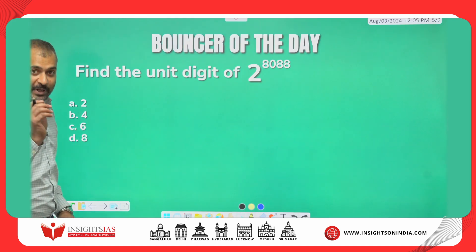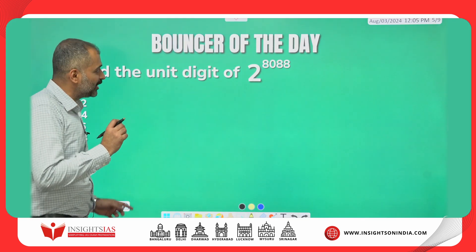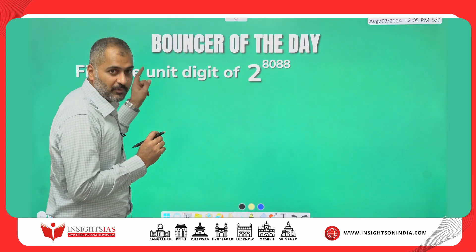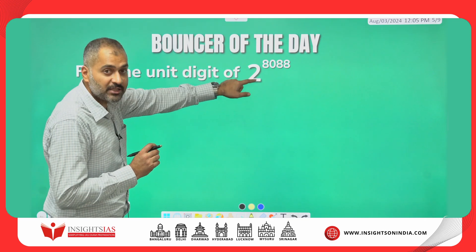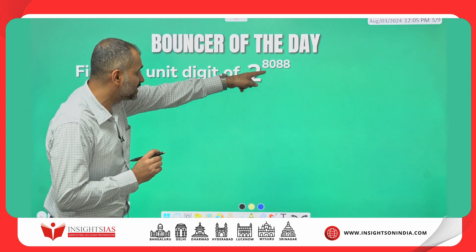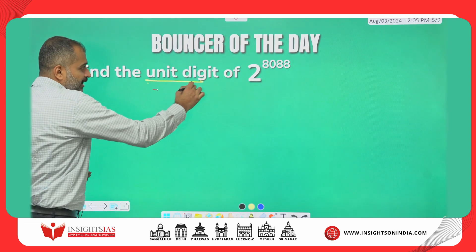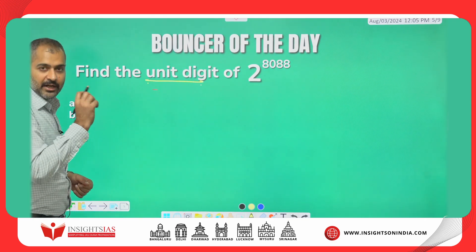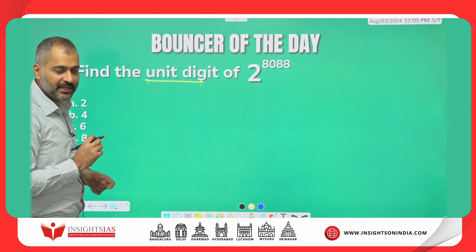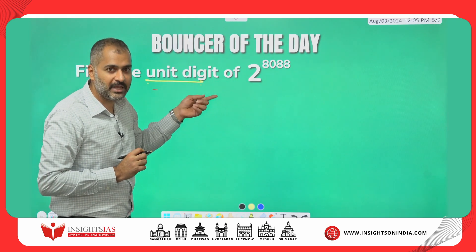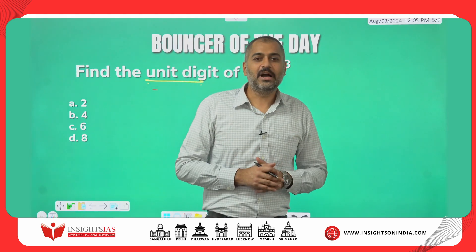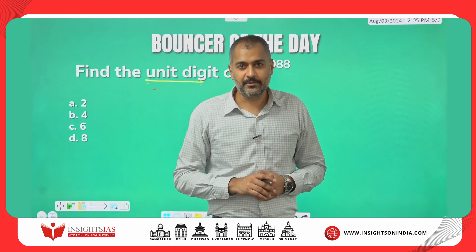And guys, a very similar question I am giving you as today's bouncer homework — find the unit digit of 2 power 8088. Try to find the cyclicity and solve it in a very similar way. Thank you, I will see you in the next video.